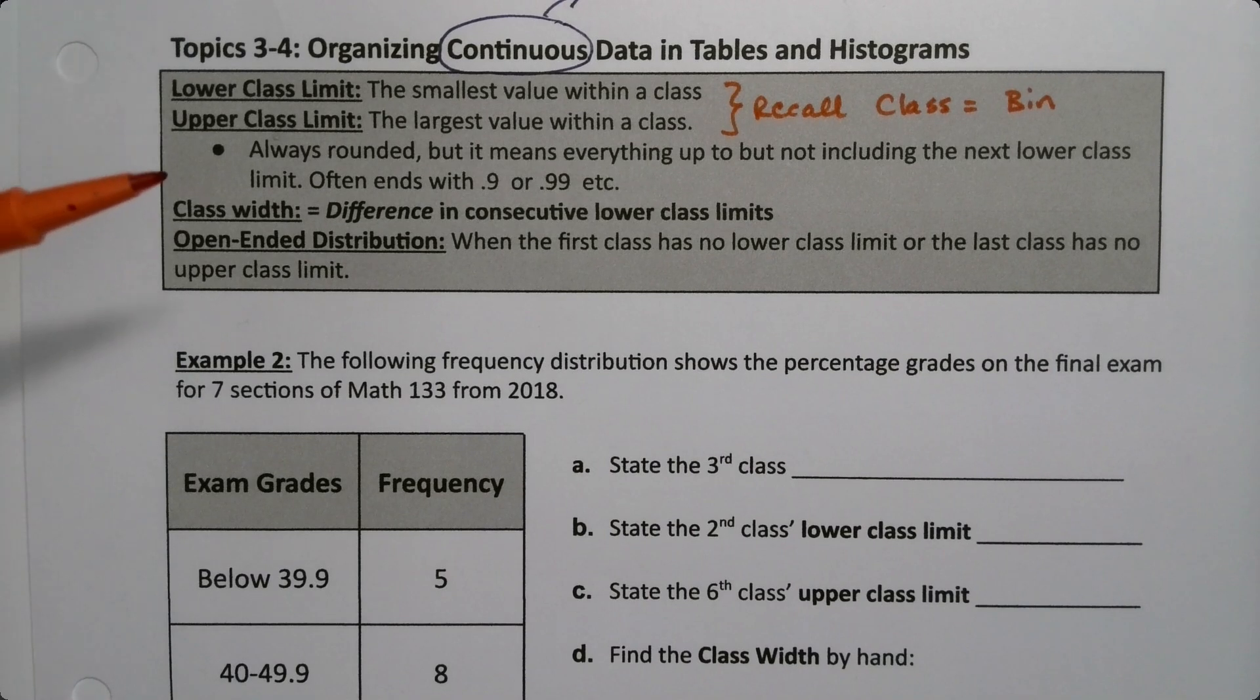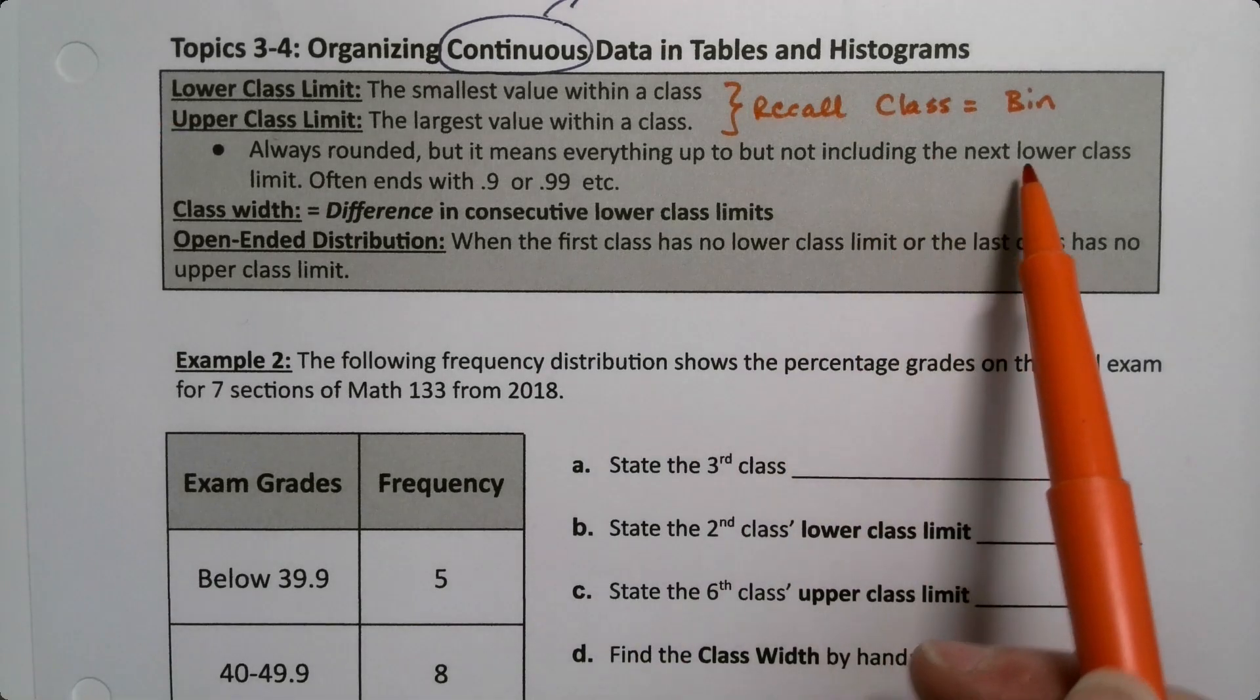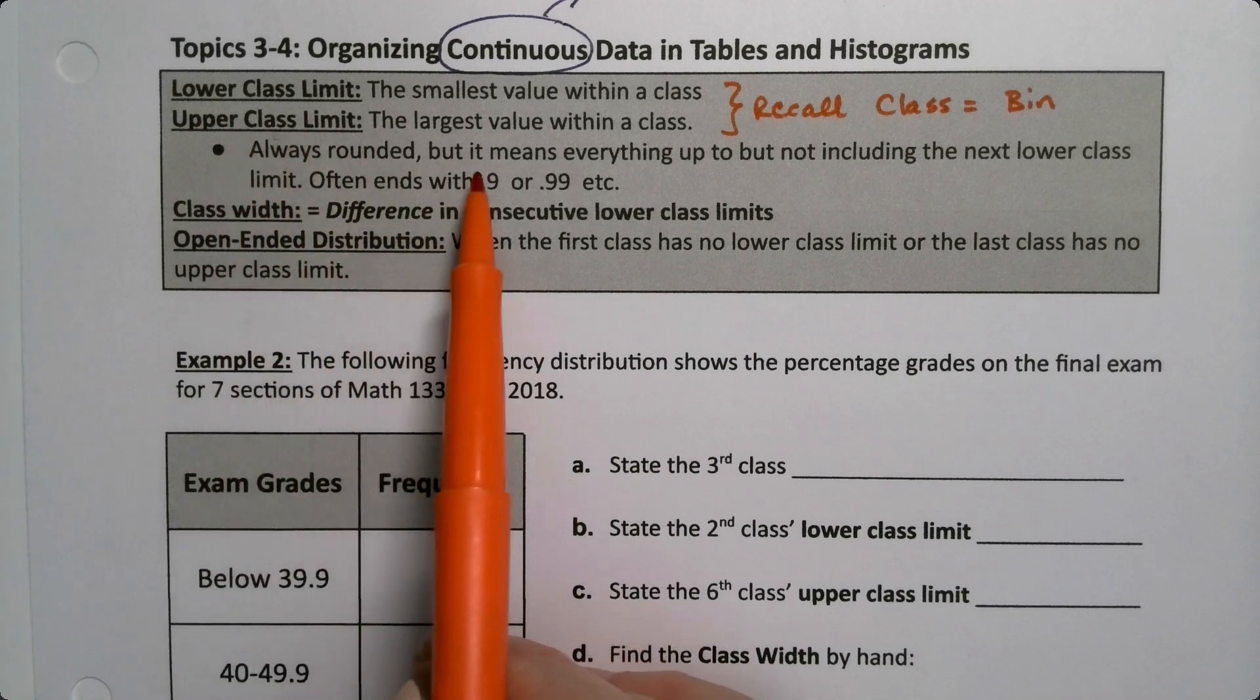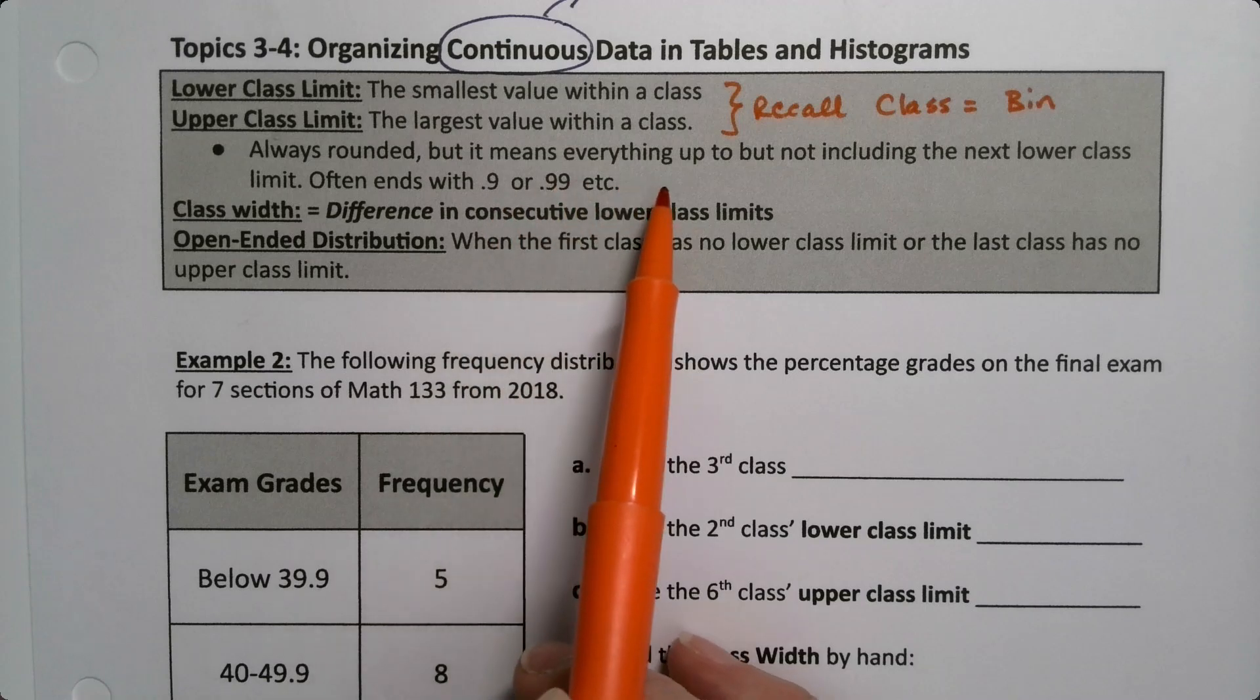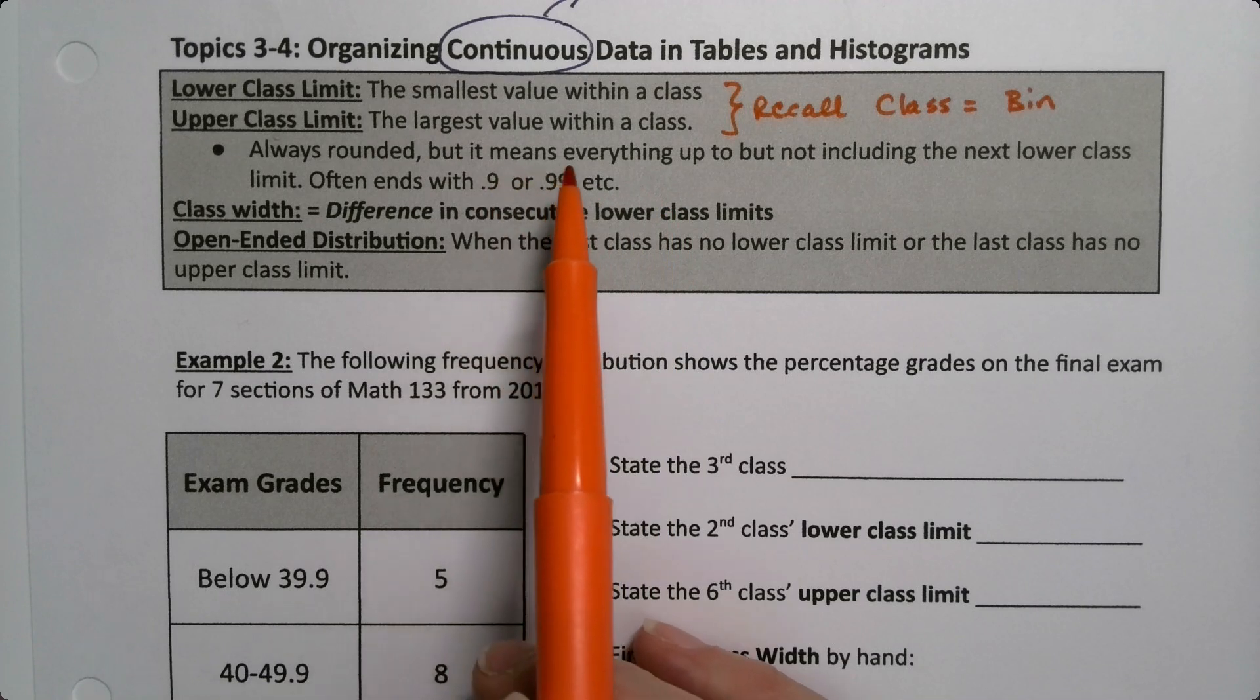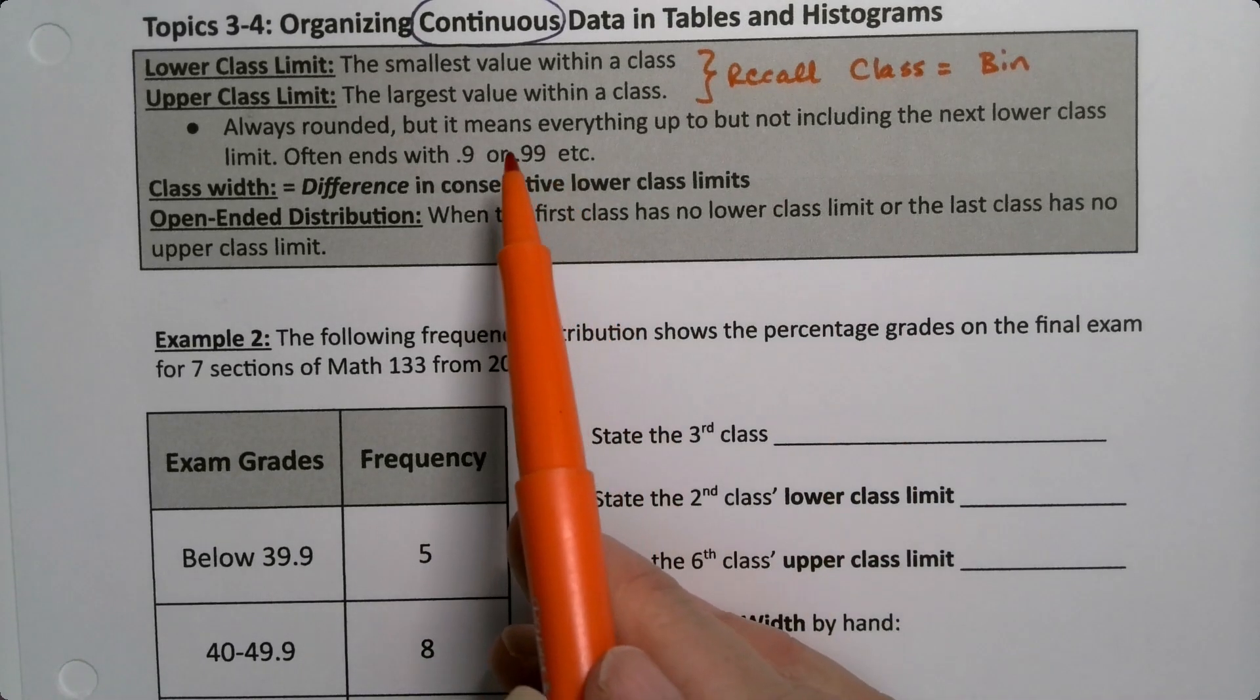We always round them, or almost always, but it means everything up to but not including the next lower class limit. So often the upper class limits will end with 0.9 or 0.99 or 0.999. We can also round them to whole numbers.